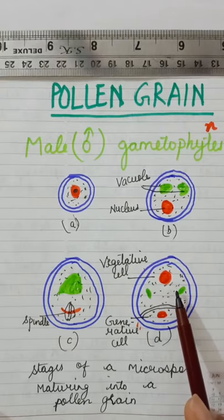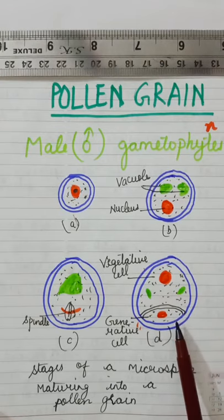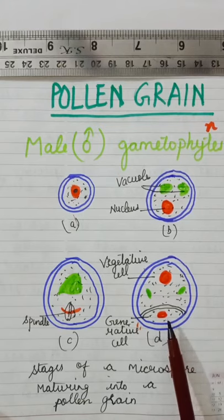The larger cell is known as vegetative cell while the smaller cell is known as generative cell.